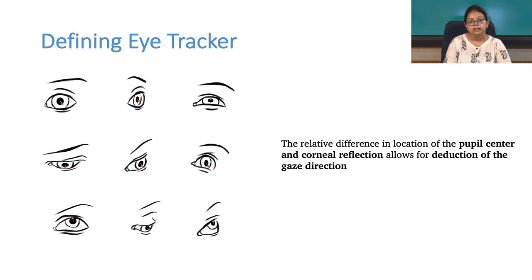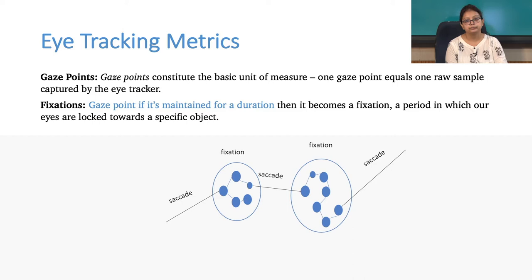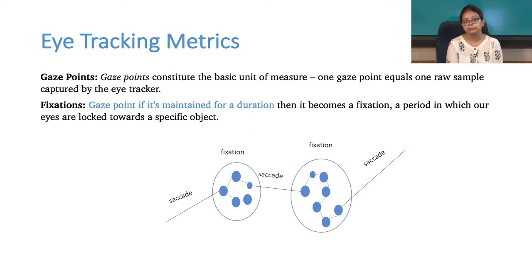The relative difference in location of the pupil center and corneal reflection allows derivation of the gaze direction. The first key terminology is gaze or gaze point — it captures raw data, and whenever you look at any stimulus or anything in the real world, it is considered a gaze. One gaze equals one raw sample captured by the eye movement recorder. The second definition is fixation — whenever you lock your gaze at a particular point in any stimulus or the real world, it is called fixation.